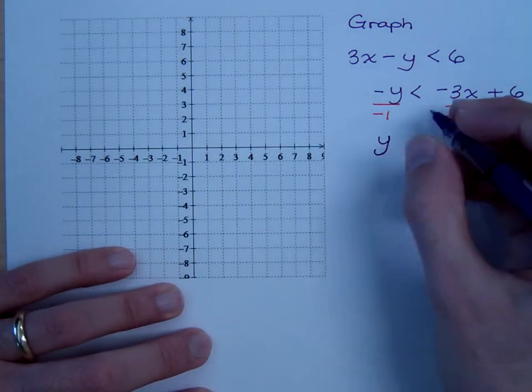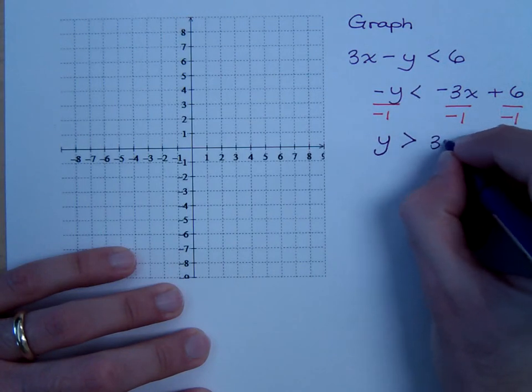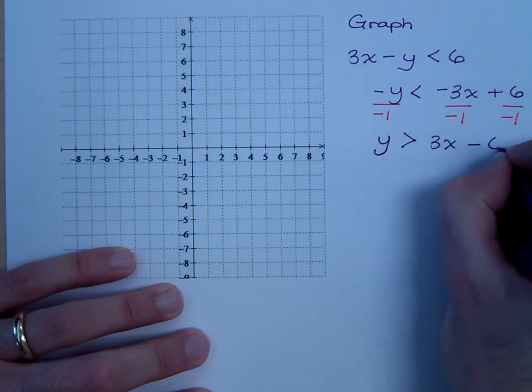So this looks like what now? y is greater than 3x minus 6.